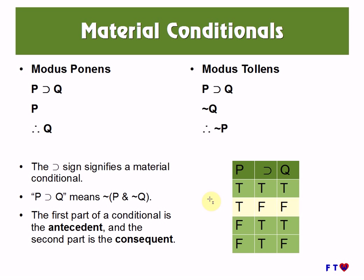Let's see how this works with the truth table. Note that 'if P then Q' is false whenever P is true and Q is false. In fact, 'if P then Q' means the denial of P and not Q; otherwise it is true. For modus ponens: where 'if P then Q' is true and P is true, that is the only place in the truth table where P is true and the whole statement is true, and there Q is also true. For modus tollens: where Q is false, that is the only place Q is false where the whole conditional is true, and in that instance P is also false. The truth table thus shows that modus ponens and modus tollens are both valid forms of argument.